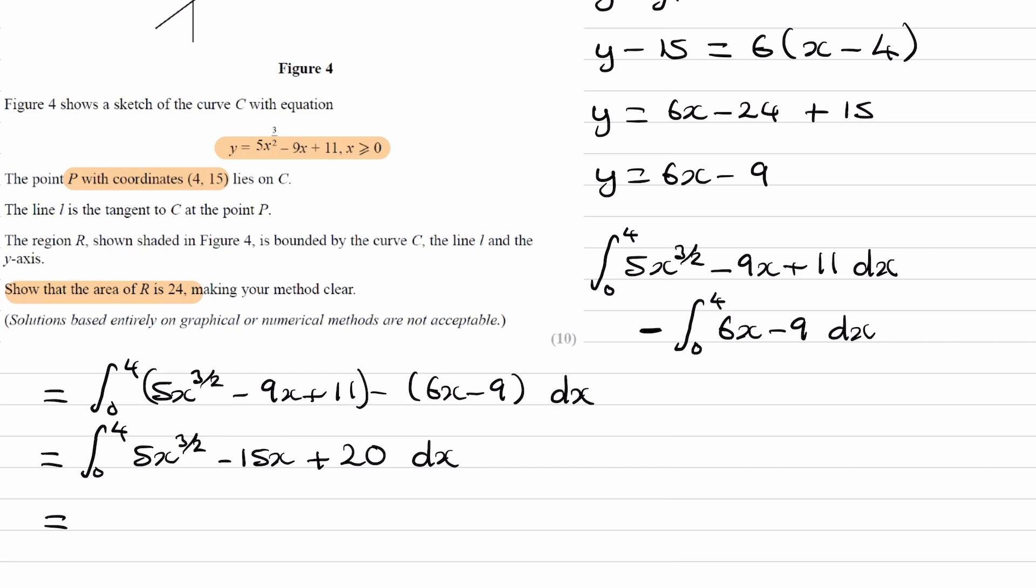And then we just integrate. So raise the power by 1, divide, so 5 divided by 5 over 2 would be just 2. So we get 2x to the 5 over 2 minus 15x squared over 2 plus 20x. Limits would be 4 and 0.